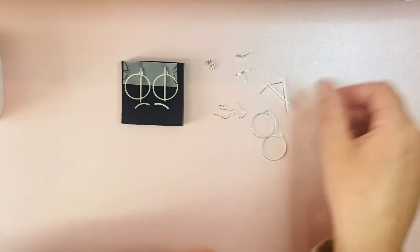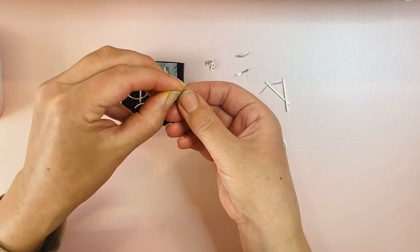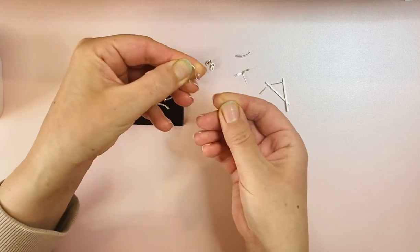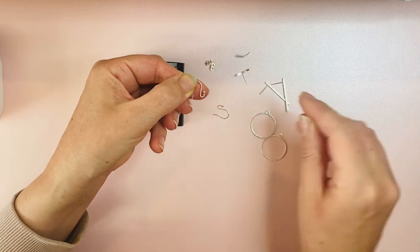Then with the hooks, what you need to do is open them gently so that there's a gap between the hook and the little ball.